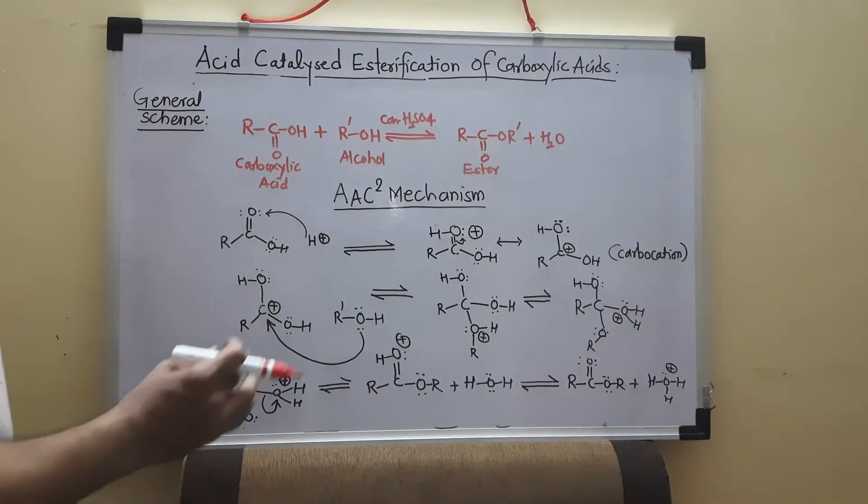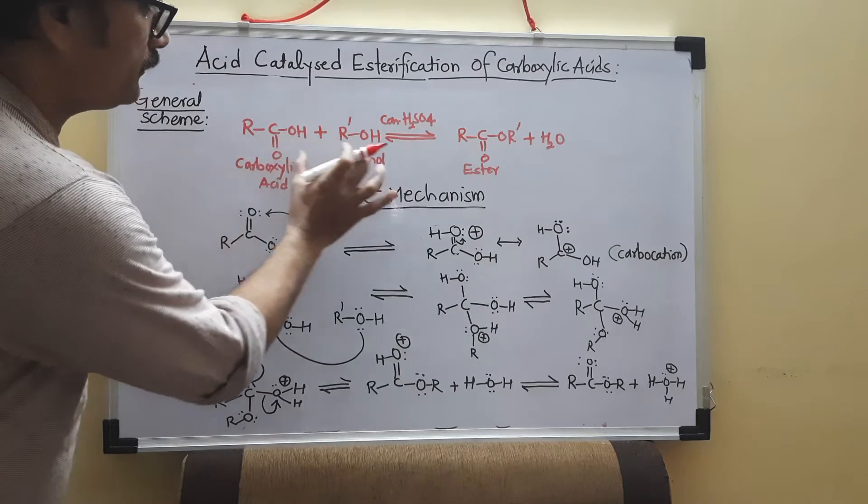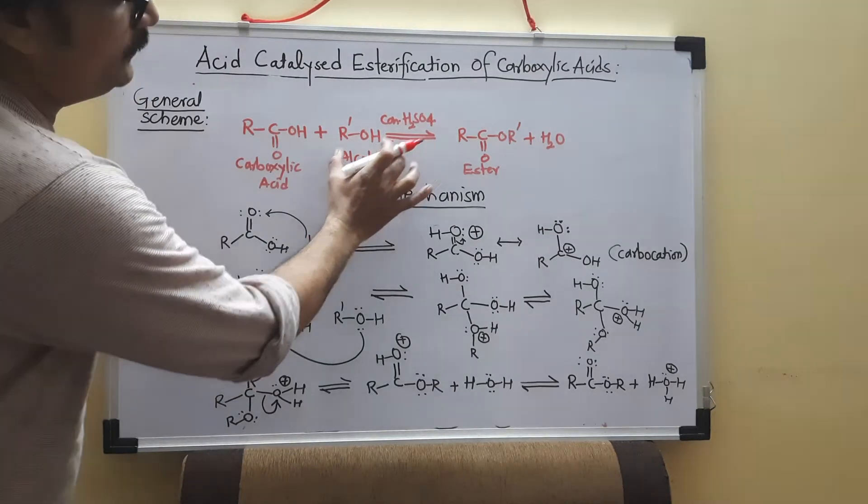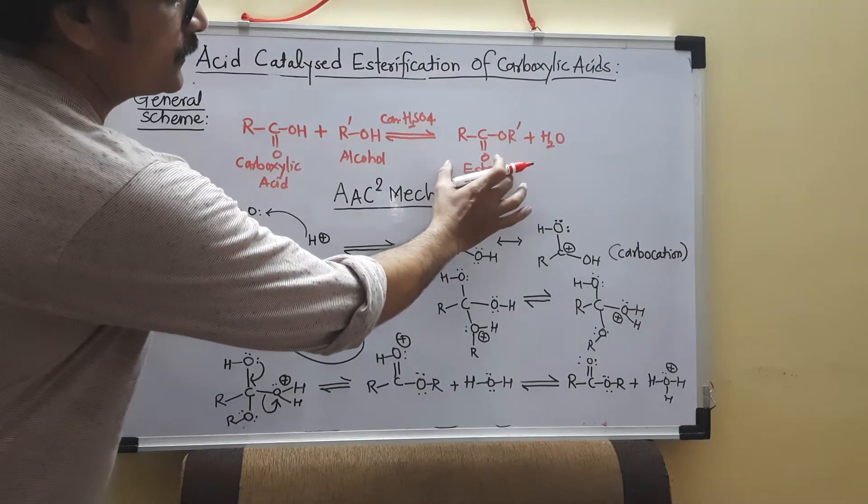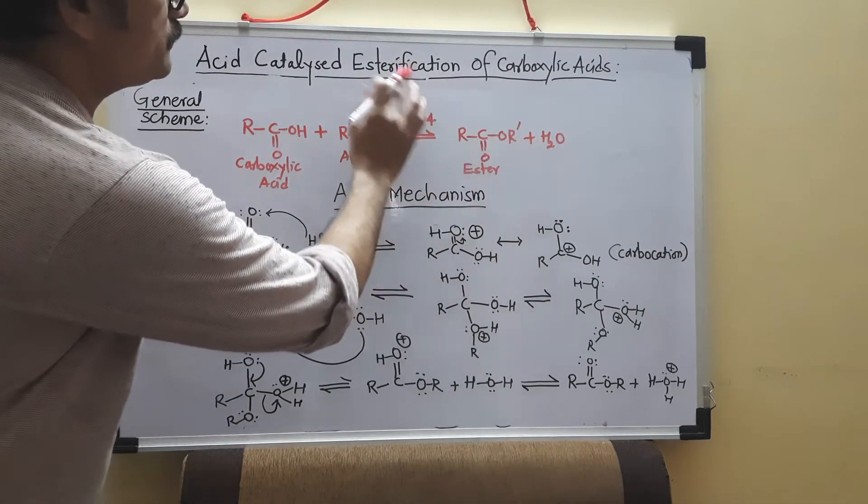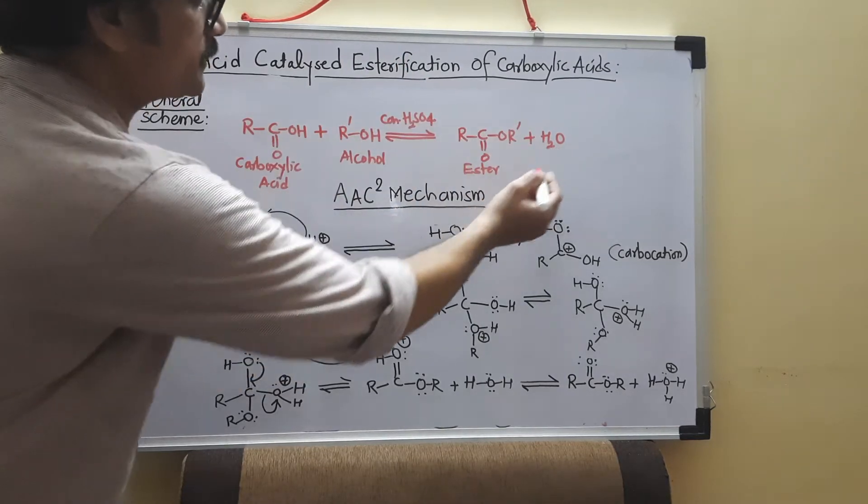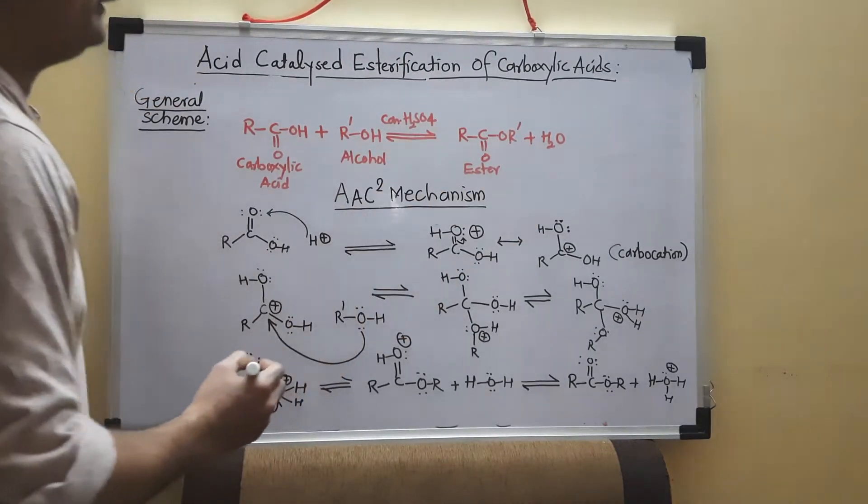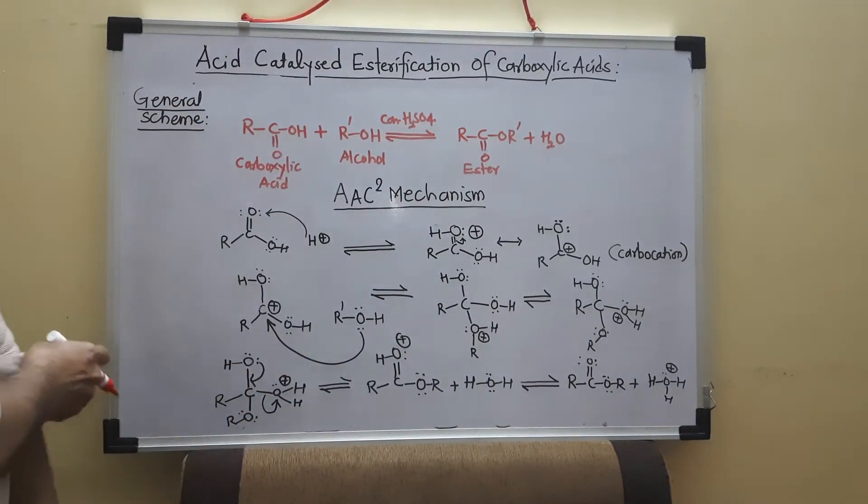When carboxylic acids are treated with alcohol in presence of concentrated H2SO4, we get ester. So ester formation reaction is called esterification reaction and the by-product is water. This is always, up to some time an equilibrium is attained.